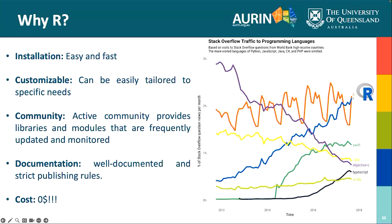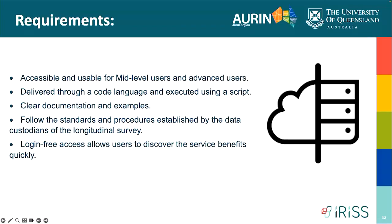After this analysis, we identified that we want to create a solution that allows us to enrich data with health and spatial data, communicating to mid-level and advanced users through a coding script with clear documentation and examples, following the standards established by data custodians. Importantly, this cannot all run in the cloud — because we don't want the private postcodes of all Australians stored in a cloud that could be hacked. The other important requirement is that this is open access and free, and can be built on by the community of Australian researchers.